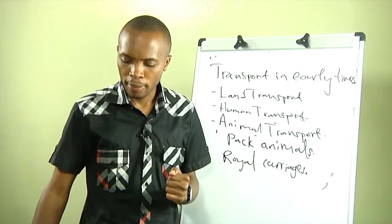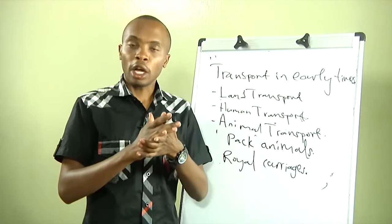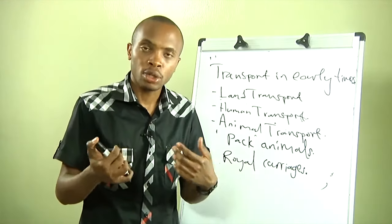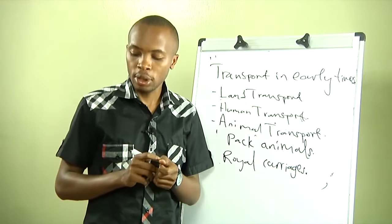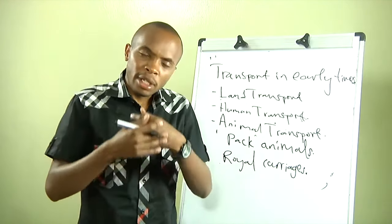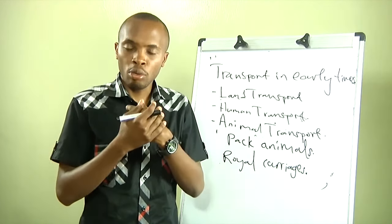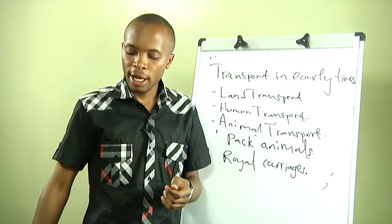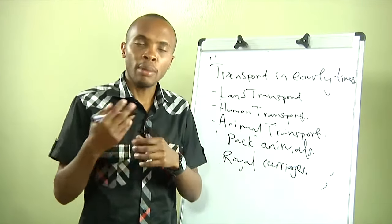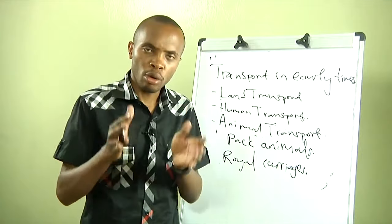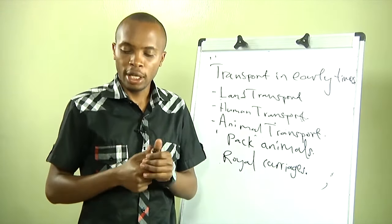Looking at some revision questions from this topic: you can be asked to define transport and communication; to identify ways through which early man carried goods — through the shoulders, chest, head, and so on; to discuss the limitations of human transport, such as carrying a small amount of goods or getting tired; and to identify reasons why a mule is more efficient as a pack animal than a donkey — for example, a mule is hardier and can carry a larger amount of goods.